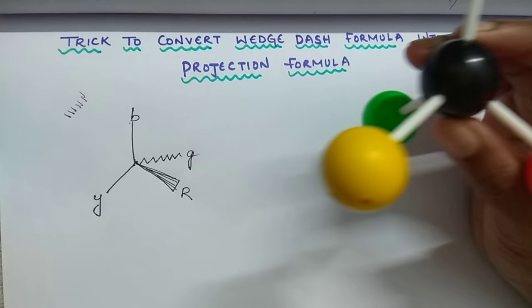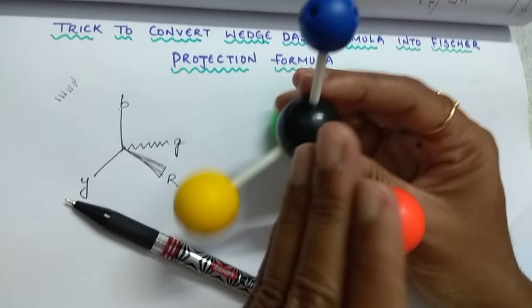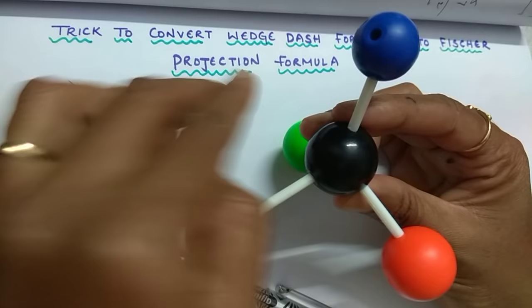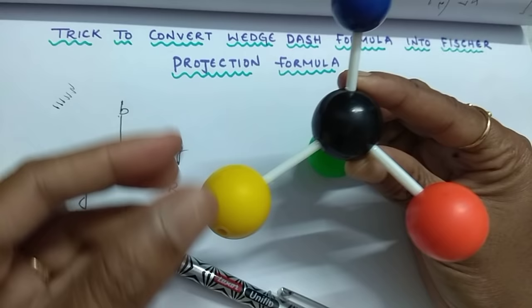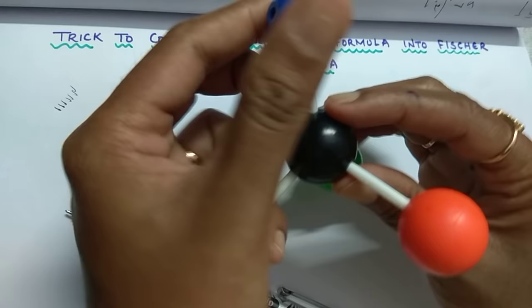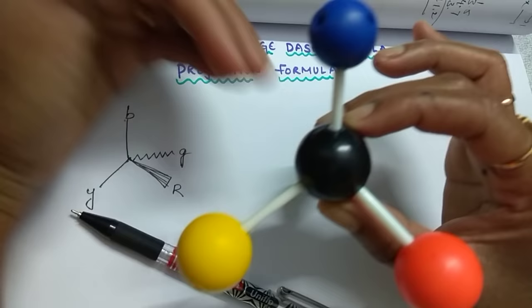I am seeing this structure in this direction — front direction. Suppose if you see in a back direction, in this direction, how do you draw the structure? These 2 — I will teach you the trick also, but first listen to the concept. This blue color ball and yellow color ball, these 2 I am holding with my hand — which are on the plane. These 2 are on the plane, and I am taking with this hand. Now see the structure — this is a back view.